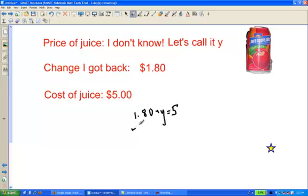So I'm going to subtract $1.80 from both sides. And by the way, $5, I can write it like that, or I could put 5.00, that's just a little help with decimals.